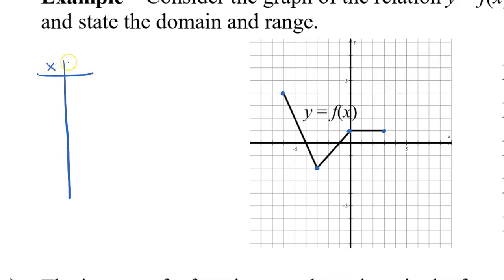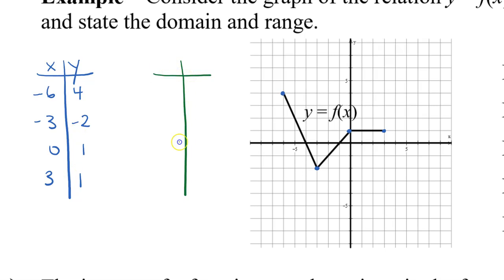For my table, I am going to choose the points: (−6, 4), (−3, −2), (0, 1), and (3, 1). To graph the inverse, I am going to take my x and y values and swap them, because that's what the inverse is. So the swapped points become: (4, −6), (−2, −3), (1, 0), and (1, 3).